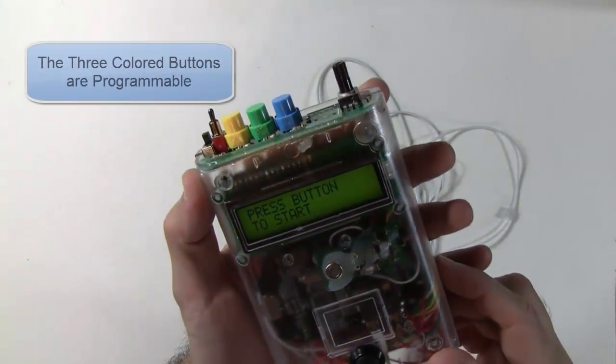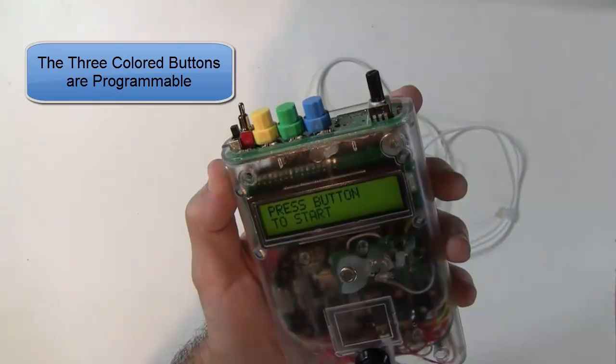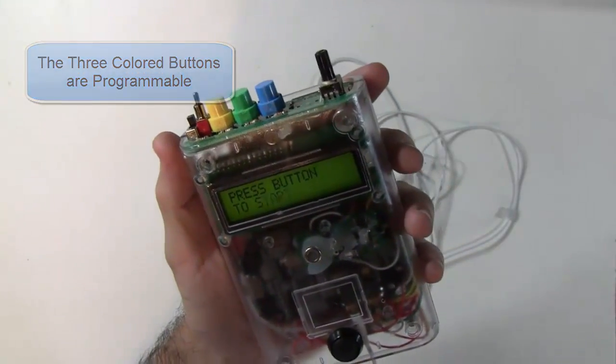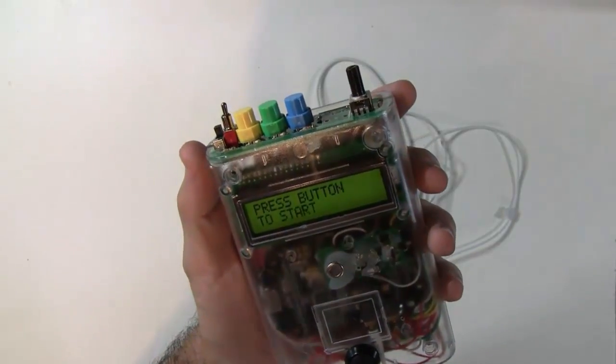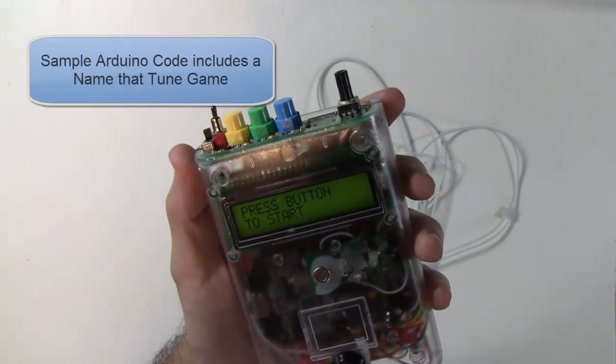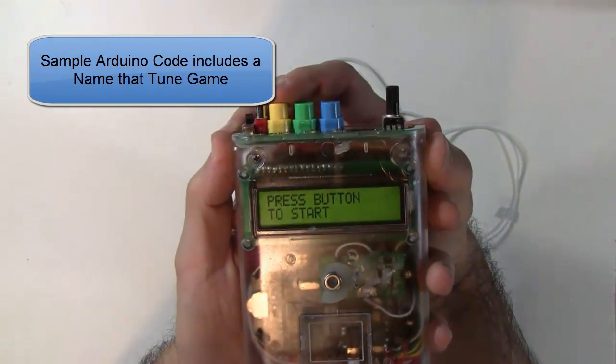Okay, so just going over a few more features, you'll notice there's these three colored buttons here. Those are there for you to program to do whatever you want. If you know how to program the Arduino, it's quite easy. What we've done is given a few examples on what can be done. So let me hit the yellow button here.